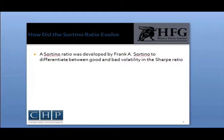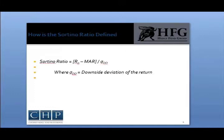The Sortino Ratio was developed by Frank Sortino to differentiate between good and bad volatility. It considers downside risk as the only source of volatility needed to be measured by an investor. By definition, the Sortino Ratio is closely related to the Sharpe Ratio.